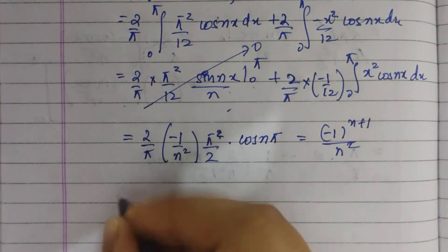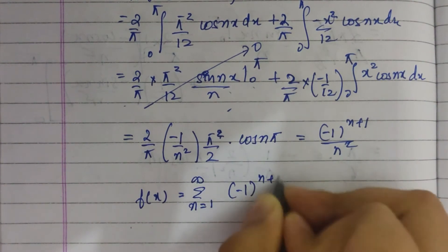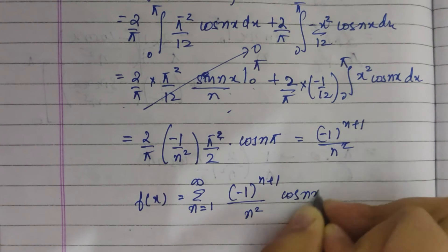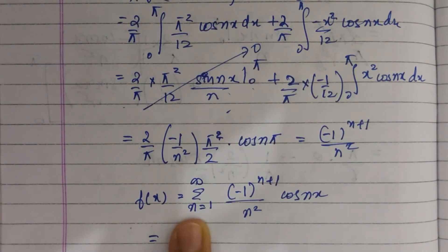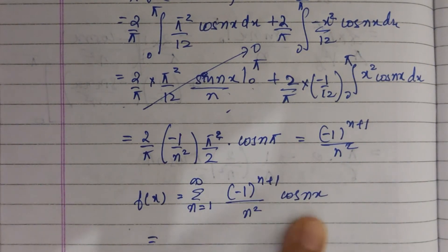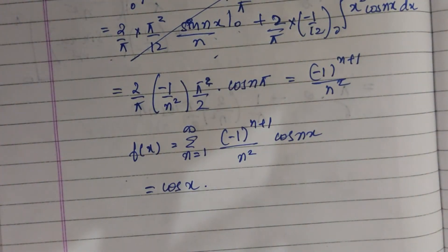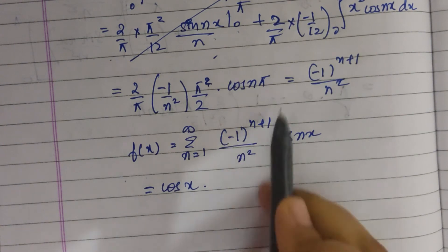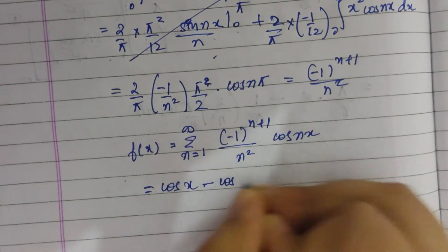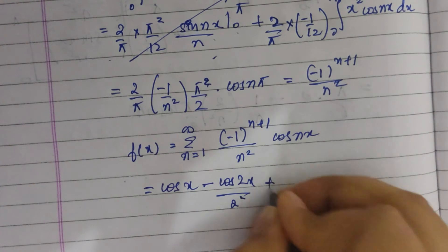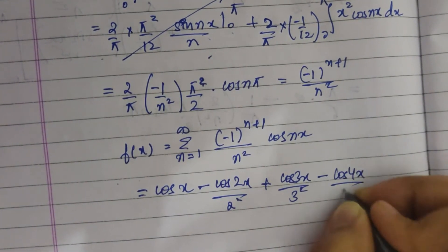So f of x equals summation from n equals 1 to infinity of minus 1 to the power n plus 1 divided by n squared, times cos nx — since this is an even function. Substituting values: when n equals 1, we get cos x; when n equals 2, cos 2x divided by 4; when n equals 3, cos 3x divided by 9; when n equals 4, minus cos 4x divided by 16; and so on.